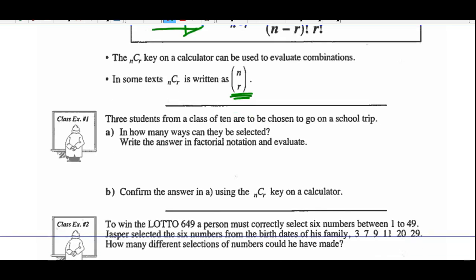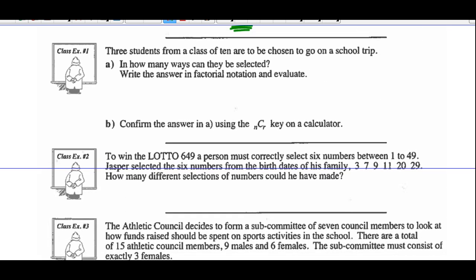Example 1: three students from a class of 10 are chosen to be on a school trip. How many ways can they be selected? Write your answer in factorial notation and evaluate. So you've got 10 students, we want to choose three. They're going on a trip, so order is not important — we just need 3 to be chosen. According to our formula, that's 10 factorial over 7 factorial and 3 factorial.